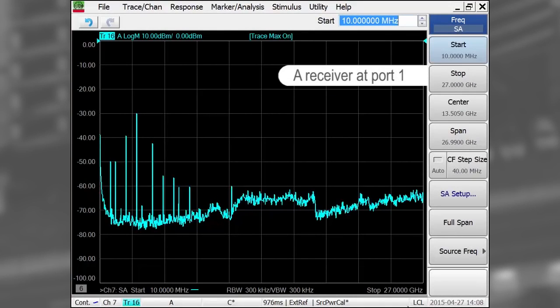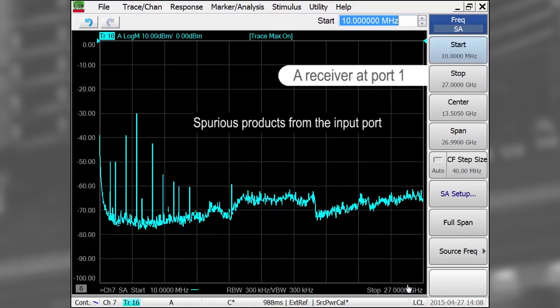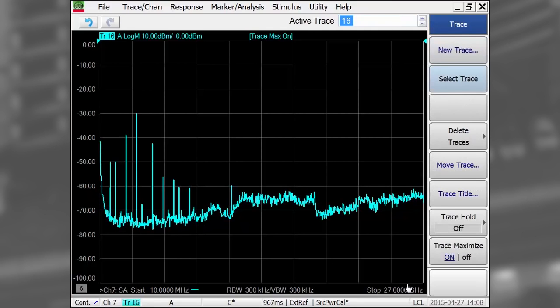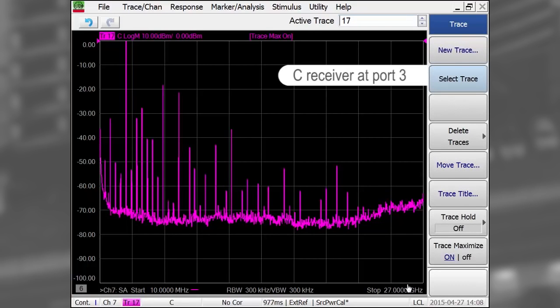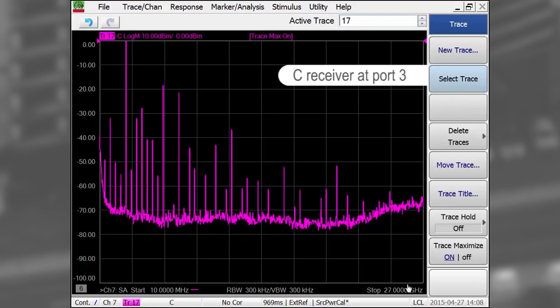The A receiver at port 1 shows the spurious signals coming out of the input port, which, if connected to an antenna, could cause radio frequency interference. The C receiver at port 3 shows the large amount of spurious products coming out of the converter's LO port, which, in this case, is to be expected since there are no LO amplifiers to provide reverse isolation.